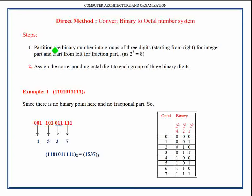In the first step we have to partition the given binary number into groups of three digits. When partitioning the integer part, we start from the rightmost digit and continue towards the left direction. When partitioning the fractional part, this process starts from the leftmost bit and continues towards the right direction.